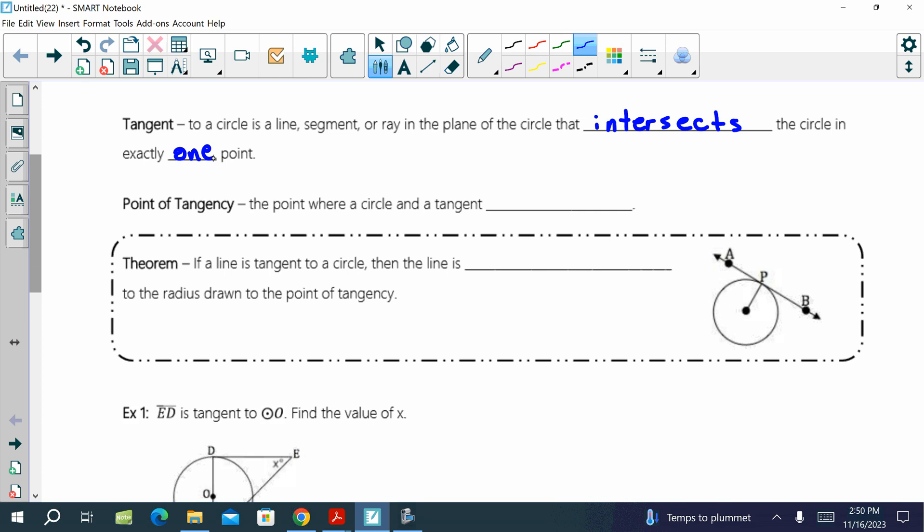The point of tangency is the point where a circle and a tangent intersect. So the theorem, we got a few theorems that go along with tangent lines.